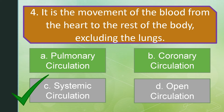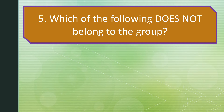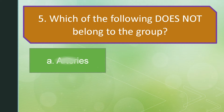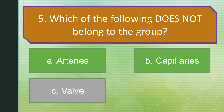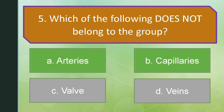Question number five. Which of the following does not belong to the group? Letter A: Arteries. Letter B: Capillaries. Letter C: Valve. Or letter D: Veins. The answer is letter C: Valve.